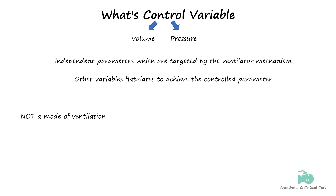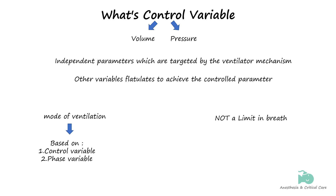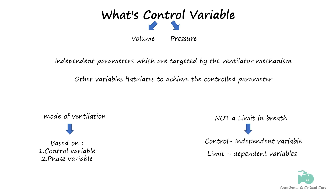The ventilator mode is determined by the characteristics or settings of control variables and phase variables. Another thing to distinguish is that the control variable is not the same as the limit variable of the inspiratory phase. While the control variable exclusively controls or limits one parameter of interest, limits are set to make sure all the other dependent variables don't go out of control in the process of achieving the control variable.